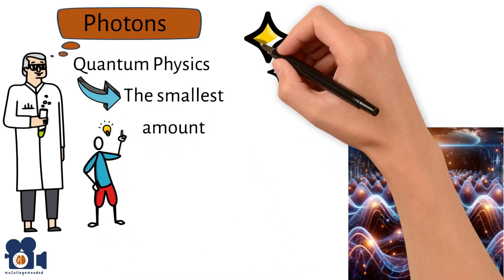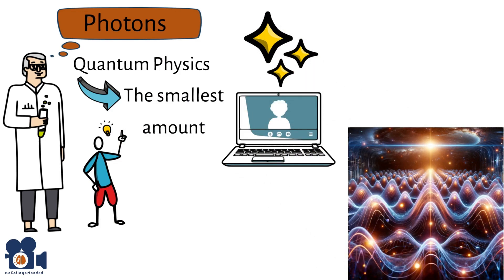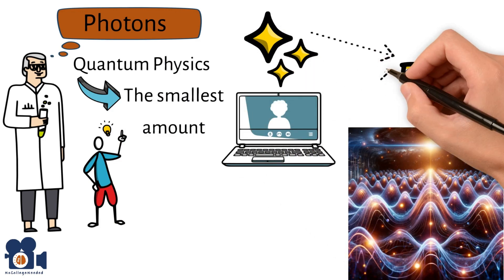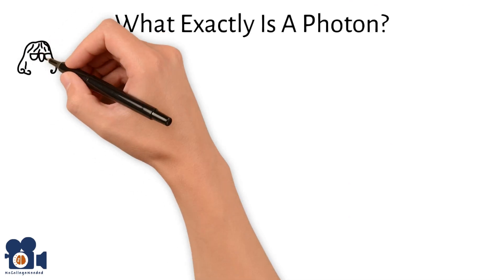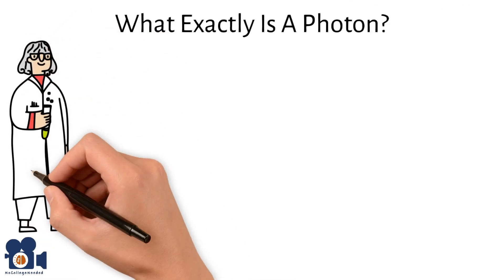Whether it's the light from a distant star or the glow of your screen, photons are everywhere, carrying the energy of the electromagnetic spectrum to your eyes. But what exactly is a photon, and why is it so important in both realms of chemistry and our daily lives?